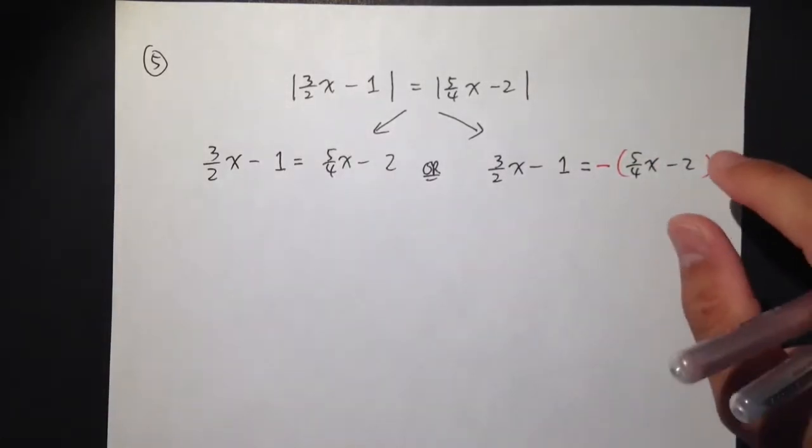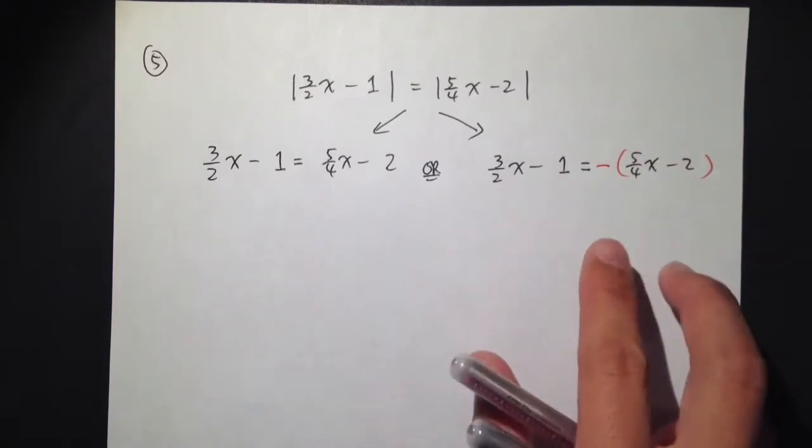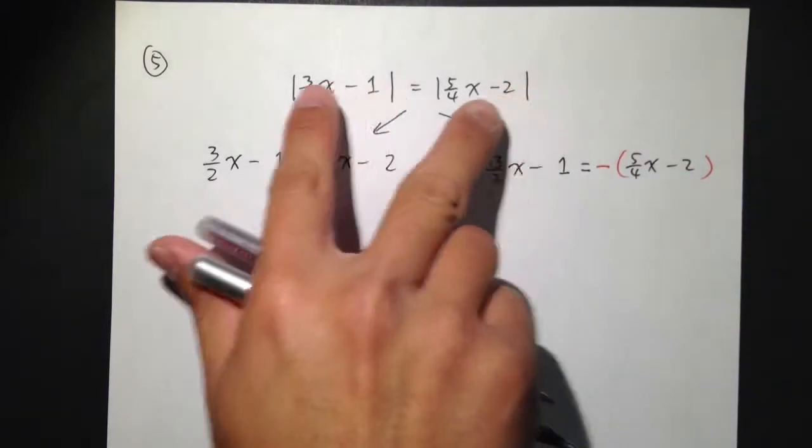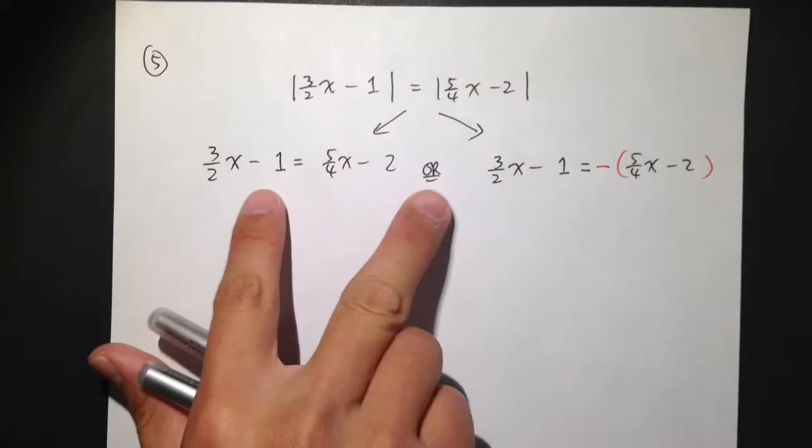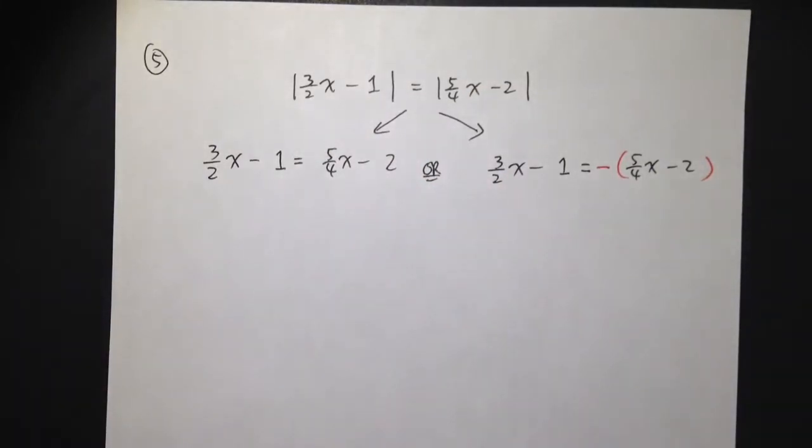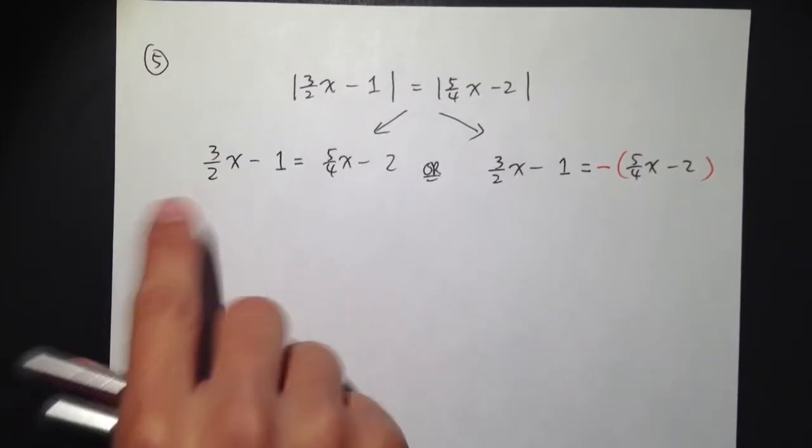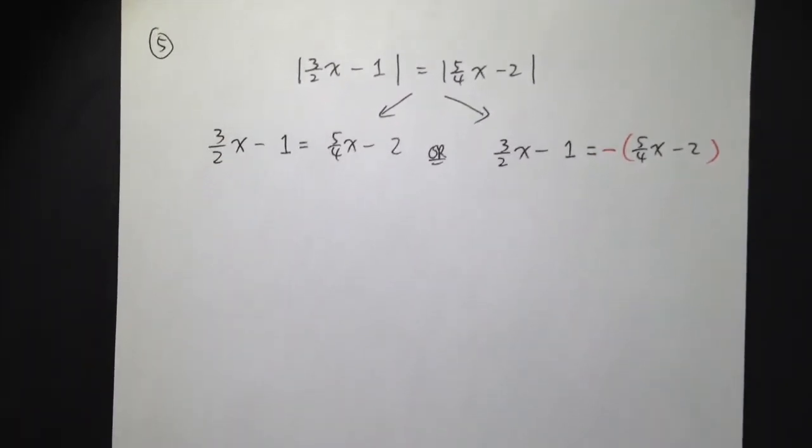So, this is how you take care of an equation that has two absolute values, and we change from the absolute value equations to two normal equations, and then we're going to solve this in a normal way. But the question here is, how do we take care of fractions? Because we don't want to do adding, subtracting fractions, especially solving equations.